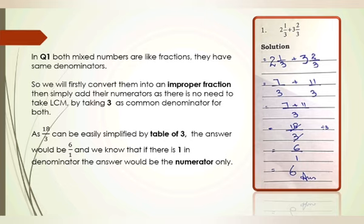Now let's look at question number 1, where both mixed numbers have like fractions with the same denominator. First, convert the mixed numbers into improper fractions: 2 and 1/3 becomes (3×2 + 1) = 7/3, and 3 and 2/3 becomes (3×3 + 2) = 11/3. Both denominators are the same, so we write 3 as the common denominator and add: 7 plus 11 is 18/3. Simplifying, 18 ÷ 3 = 6, so the answer is simply 6.